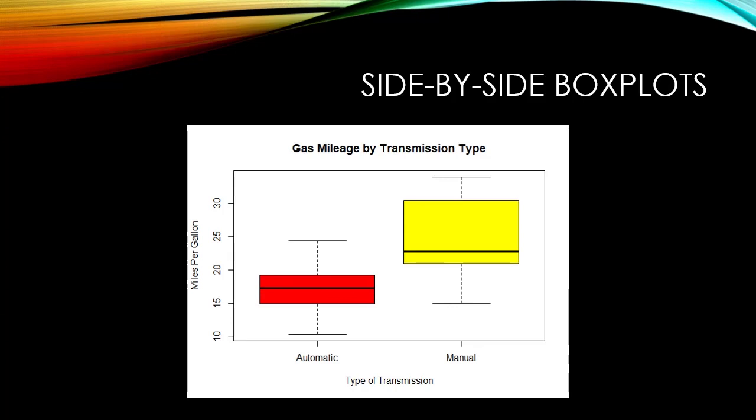So, do you see how analyzing the differences in gas mileages for manual and automatic transmissions is how we can detect if there's a relationship of gas mileage to transmission type?